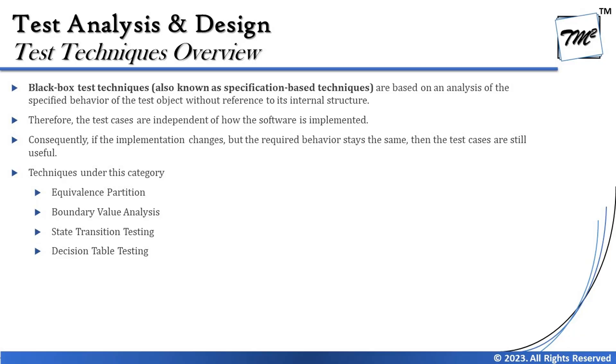The very first category is black box test techniques. When we talk about black box test techniques — which was covered as an introductory concept in chapter two, where we differentiated between white box and black box — a black box tester who wants to reduce their number of test cases would prefer using black box test techniques. Black box test techniques are also called specification-based techniques, based on the analysis of the specified behavior of the test object without reference to its internal structure.